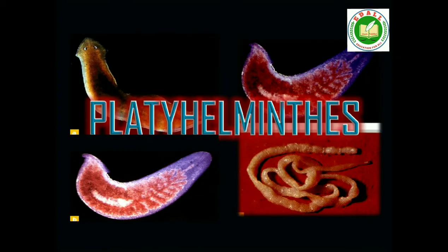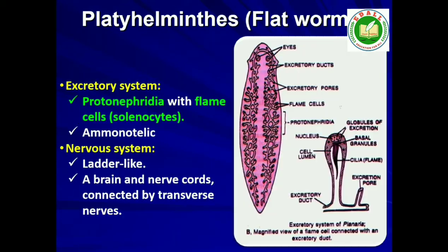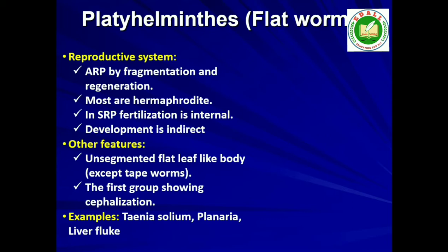Examples: Pleurobrachia and Ctenoplana. Fourth is Phylum Platyhelminthes. They have a dorsoventrally flattened body, hence are called flatworms. These are mostly endoparasites found in animals including human beings. Flatworms are bilaterally symmetrical, triploblastic and acoelomate animals with organ level of organization. Hooks and suckers are present in the parasitic forms. Some of them absorb nutrients from the host directly through their body surface. Specialized cells called flame cells help in osmoregulation and excretion. Sexes are not separate. Fertilization is internal and development is through many larval stages. Some members like Planaria possess high regeneration capacity. Examples: Taenia (also called tapeworm), Fasciola (also called liver fluke).